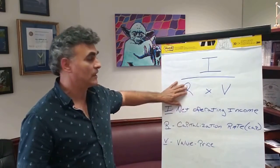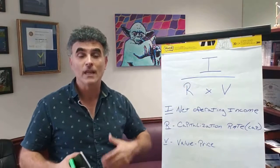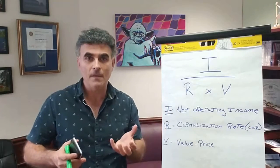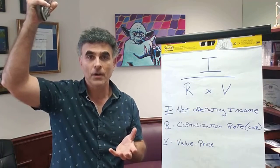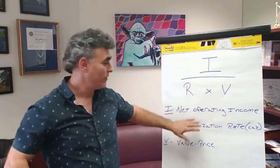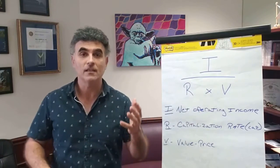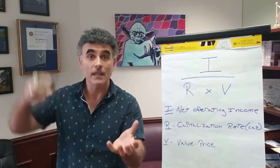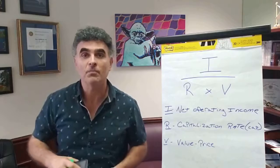The next thing here is R. R stands for cap rate — the capitalization rate. The cap rate is the ratio between how much income is coming in versus the purchase price — your net operating income versus your purchase price. A high cap rate, let's say a 10 cap, would mean that there's a lot of income coming in and the purchase price is very low, so it's a cheap property.